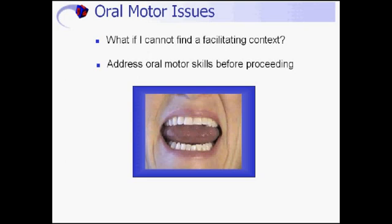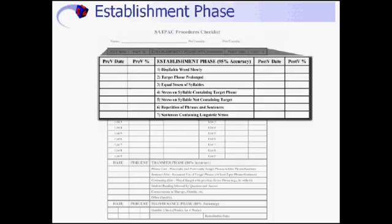Once the student is successful using the CVC-CVC facilitating context, charting can begin on the SATPAC procedures checklist. Folders can be kept for each individual student with the checklist attached and the lists printed inside. We begin with the establishment phase, which involves seven steps. The student needs 19 correct productions of the seed word out of 20 tries before moving to the next step.